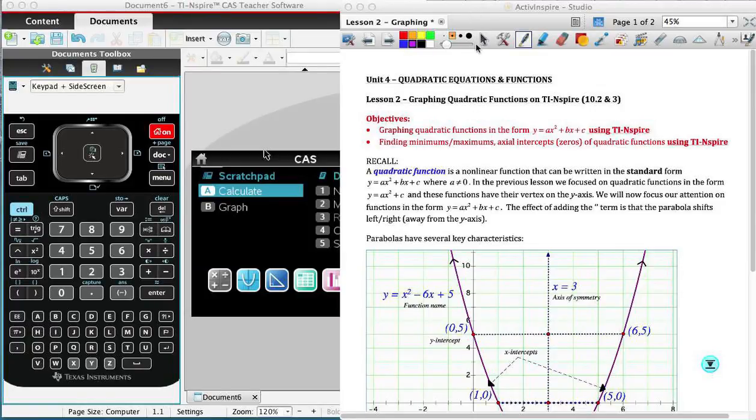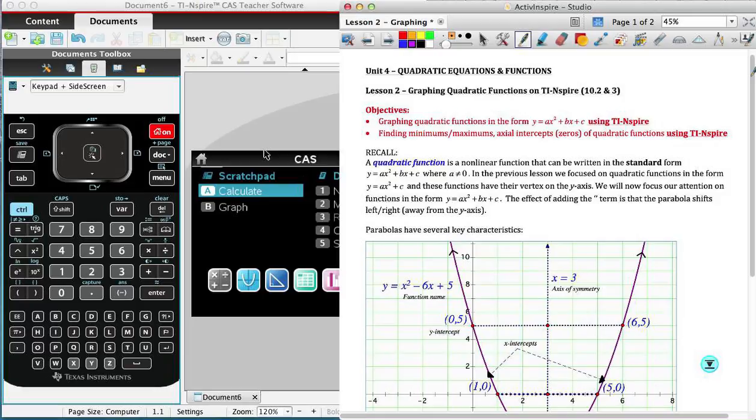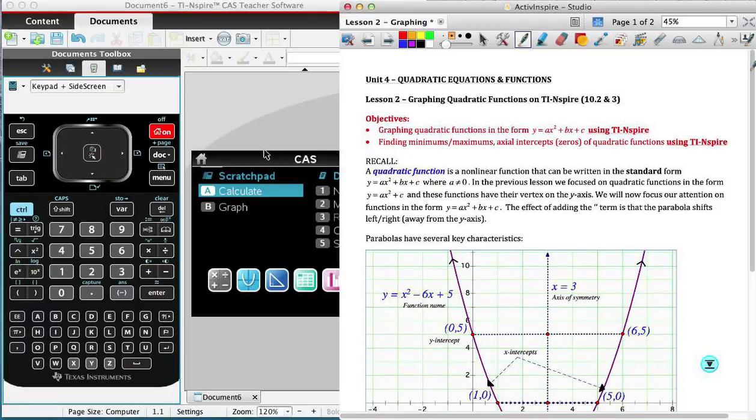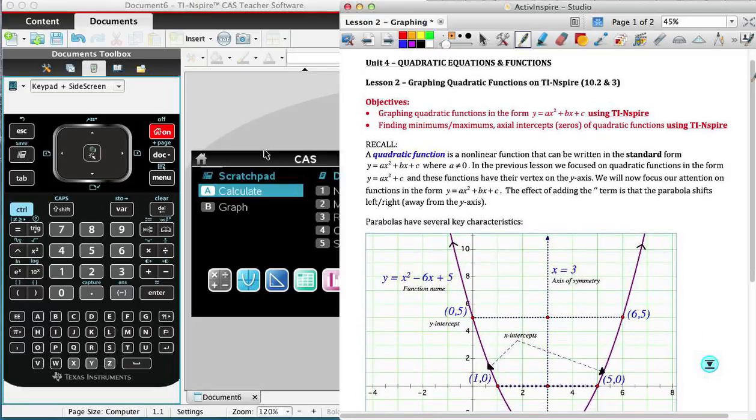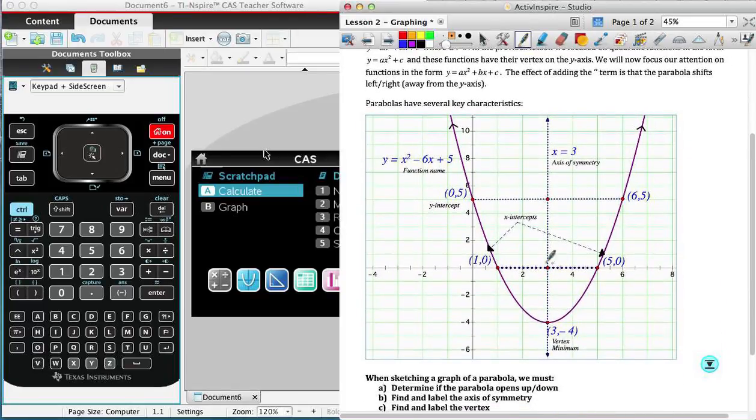Okay, so the purpose of this screen recording is to show you the use of the TI-INSPIRE to help you graph and label a parabola or a quadratic function. And so you can see that from the objectives, graph quadratic functions in the form y equals ax squared plus bx plus c. And so you'll hopefully remember from Monday's lesson that we focused then on parabolas, which kind of have a u shape.